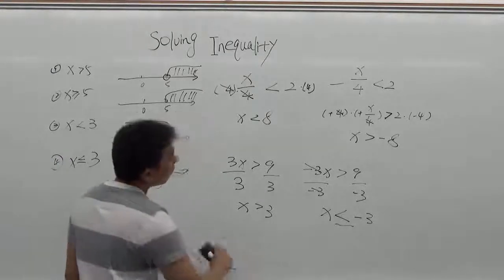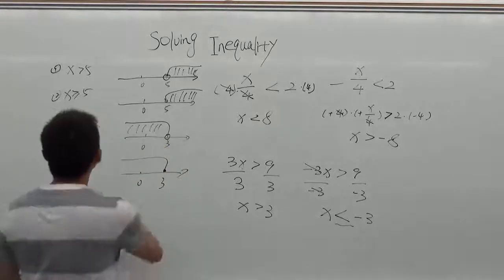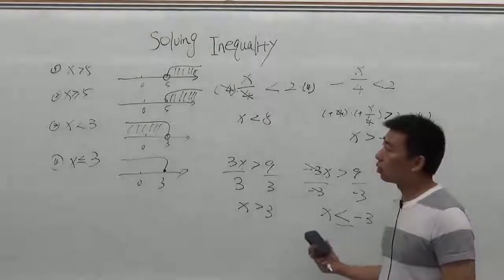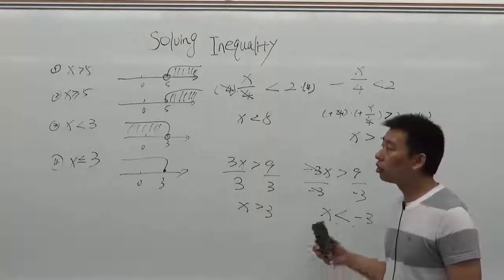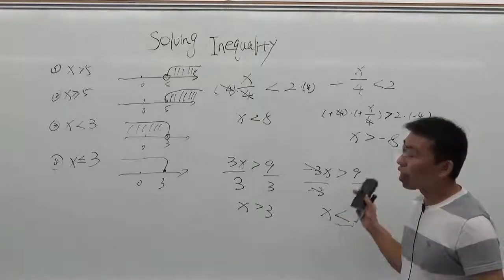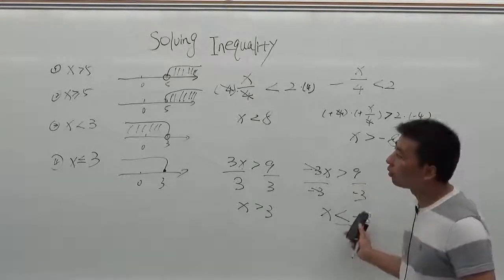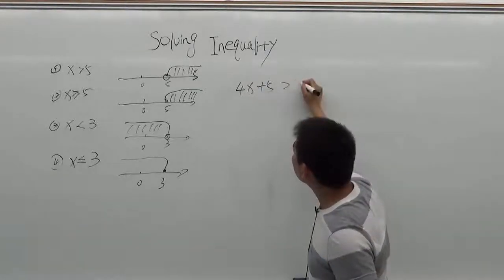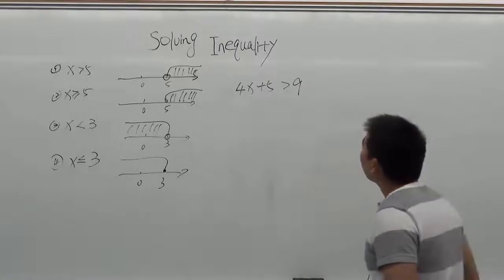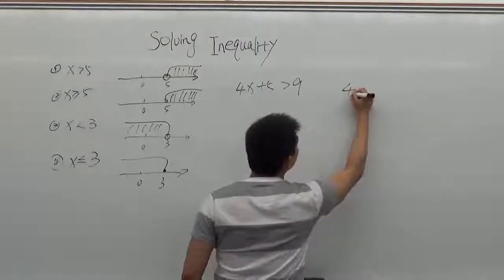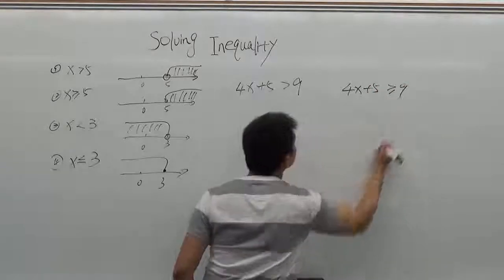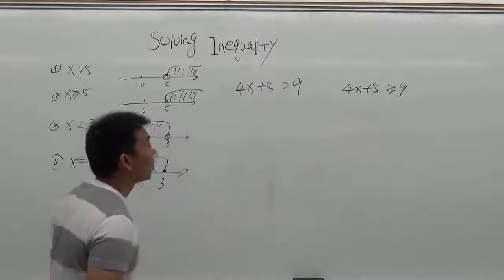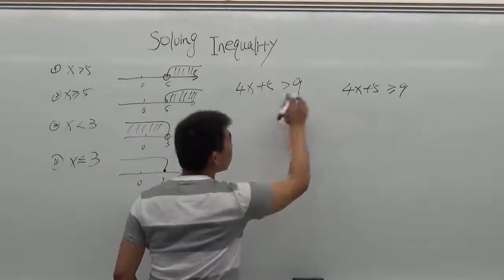Let's do a little summary and then look at examples. When solving an inequality, all the steps are the same as for an equation — just do the opposite operation. The only difference is when you divide or multiply by a negative number, you need to change the sign. Now let's look at two examples: 4x plus 5 greater than 9, and 4x plus 5 greater than or equal to 9. These two are basically the same, except for the inequality sign.